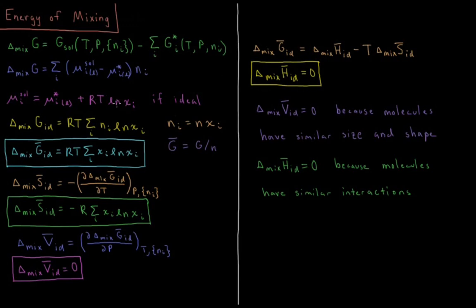What remains for every term is RT ln χᵢ. We can factor out RT in front of the sum, giving RT times the sum over all components of the number of moles of that component times the natural log of its mole fraction. We can further simplify by noting that the number of moles of each component equals the total moles n times its mole fraction χᵢ, so we substitute n·χᵢ and pull out n.